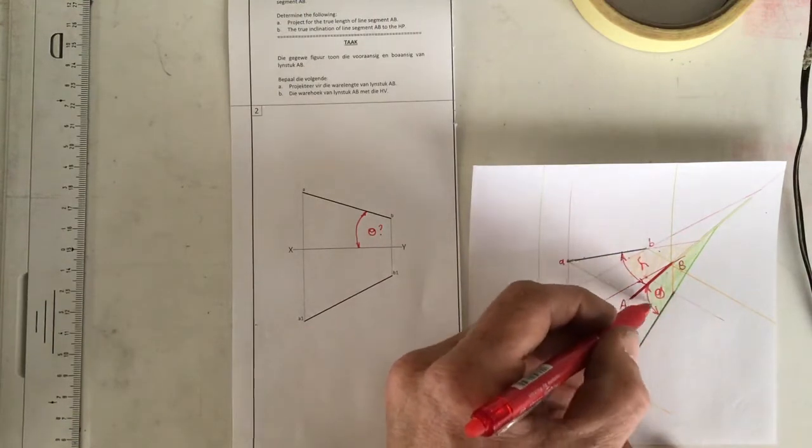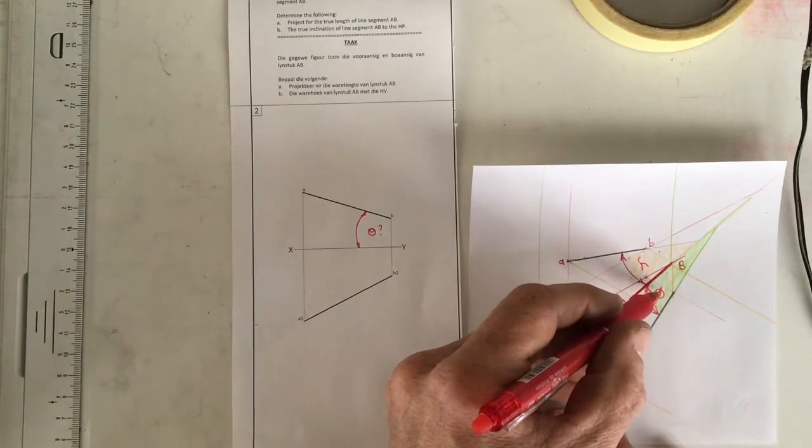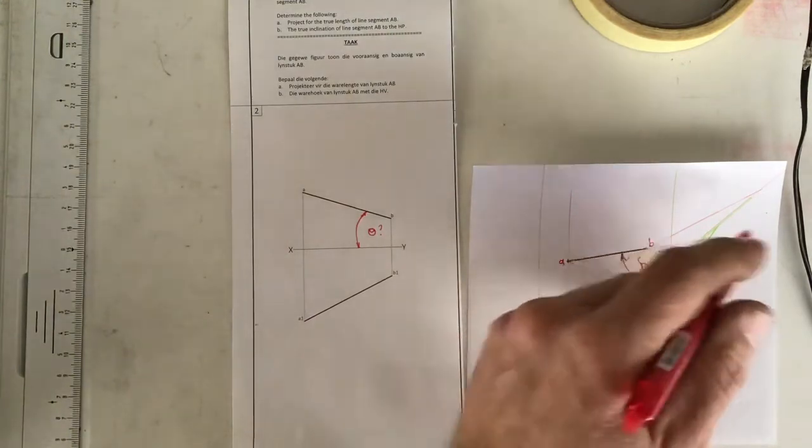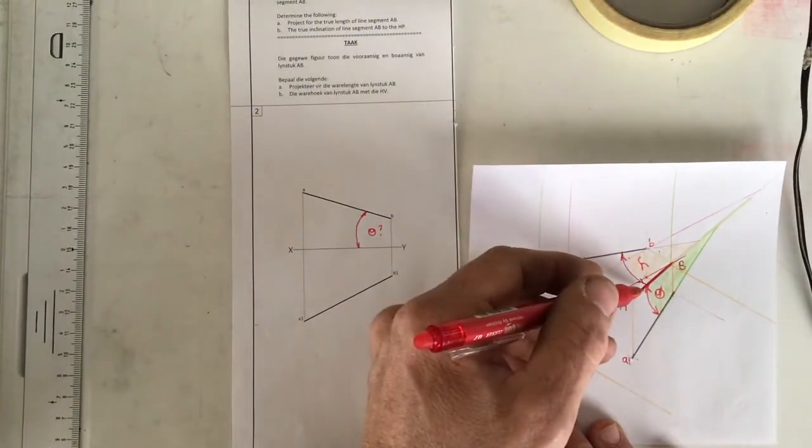And I've got this angle theta over here, which is the true angle to the horizontal plane. All right, so it's moving away from the horizontal plane there, and it's moving away from the vertical plane in there.